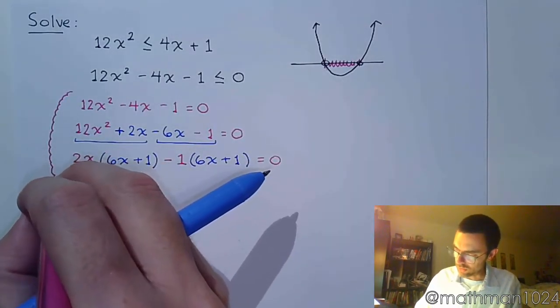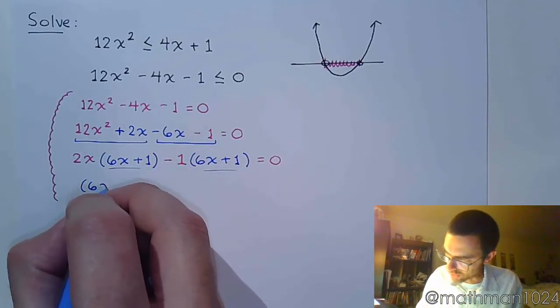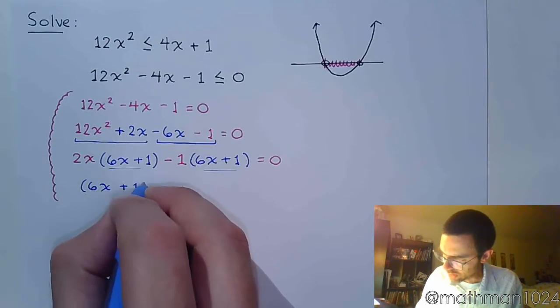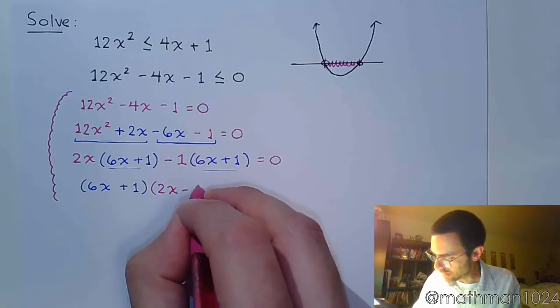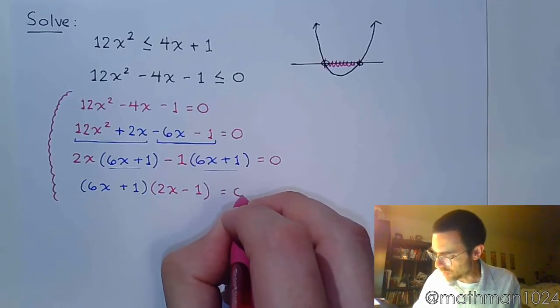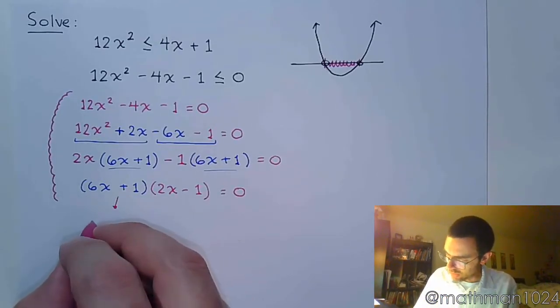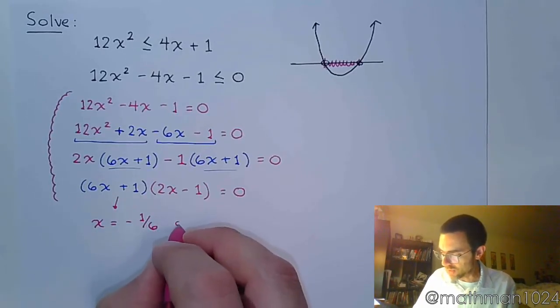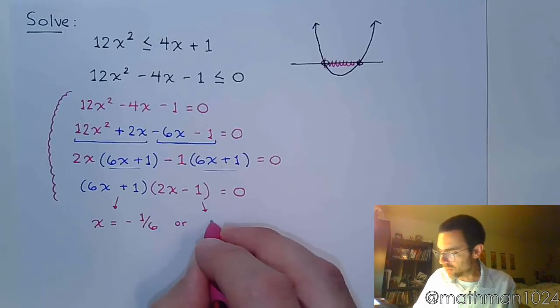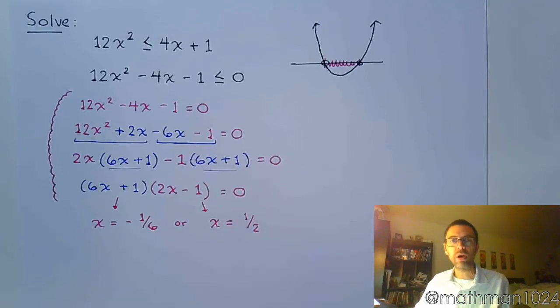So 6x + 1 is the same so we can finish the factoring by grouping. 6x + 1 times 2x - 1. So this is factoring so that we can identify those critical values by using the zero factor theorem. So x is equal to negative 1 over 6 and the other critical value, x is equal to positive 1 half.